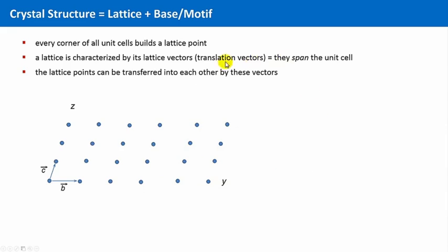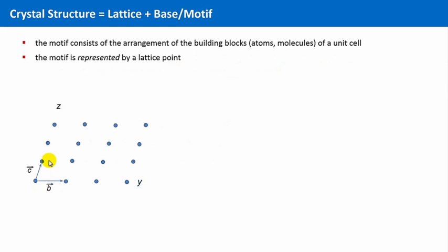A lattice is characterized by its motif. The motif consists of the arrangement of the building blocks of a unit cell — normally some atoms or a molecule, but in principle it could be everything, like this car, for instance. The motif is represented by a lattice point.